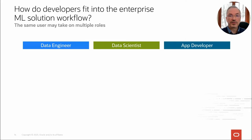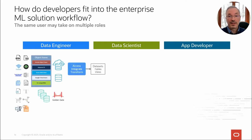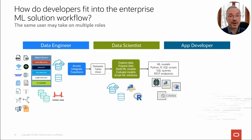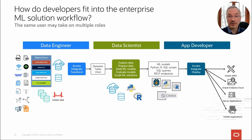How do developers fit into the Enterprise ML workflow? There are three roles: data engineer, data scientist, and app developer, though the same user may take on multiple roles. The data engineer enables data access, assembling and integrating data. The data scientist further explores and prepares data, building and evaluating models and scripting solutions. These ML models, scripts, and REST endpoints are provided to the app developer when building or augmenting applications and dashboards — whether from SQL, REST, Python, R, Oracle APEX, Analytics Cloud, or custom server or mobile applications.